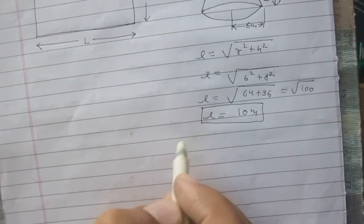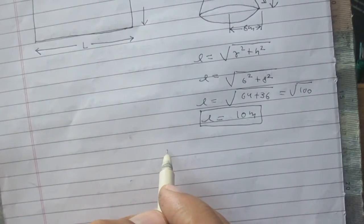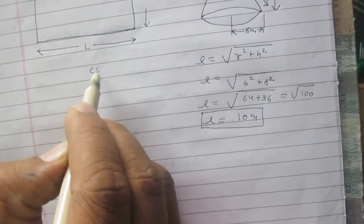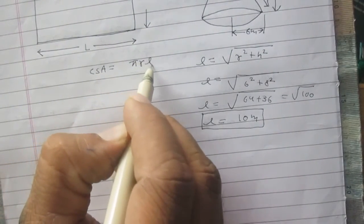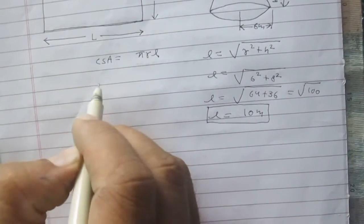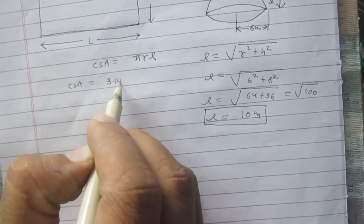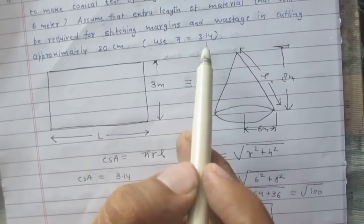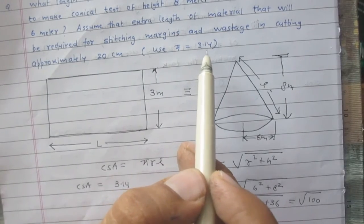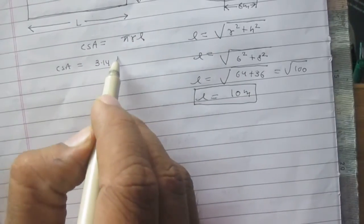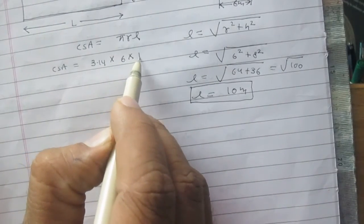Now, in order to calculate the curved surface area, we use the formula: curved surface area = π × r × l. So, curved surface area = 3.14 × 6 × 10. We are instructed to take π as 3.14, radius is 6, and slant height is 10.